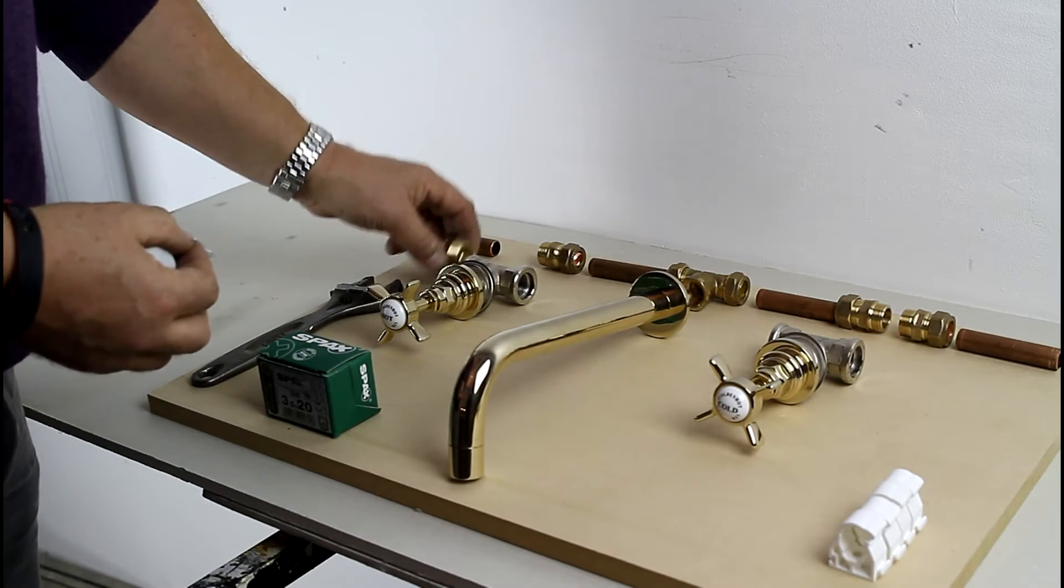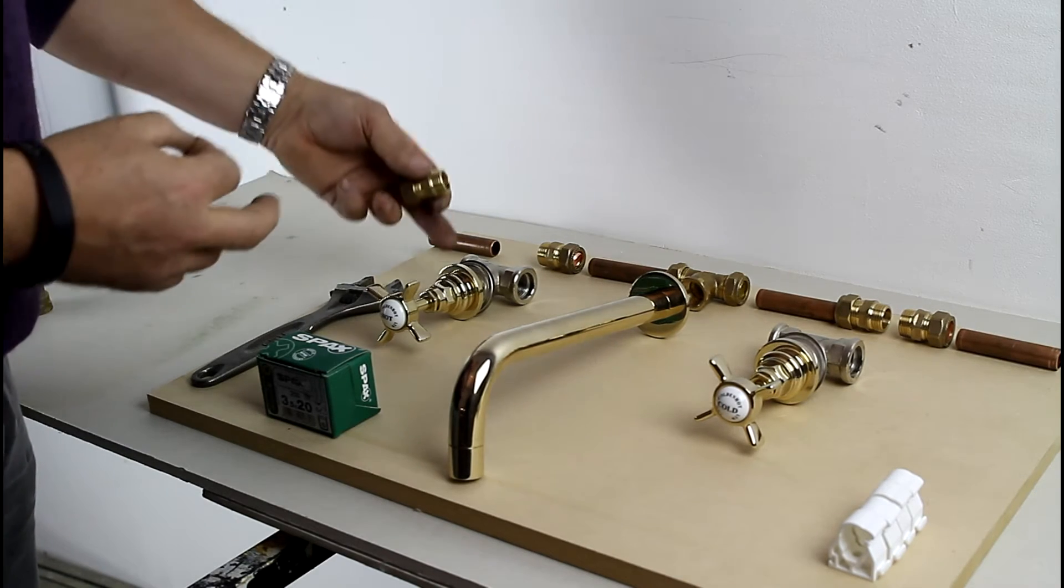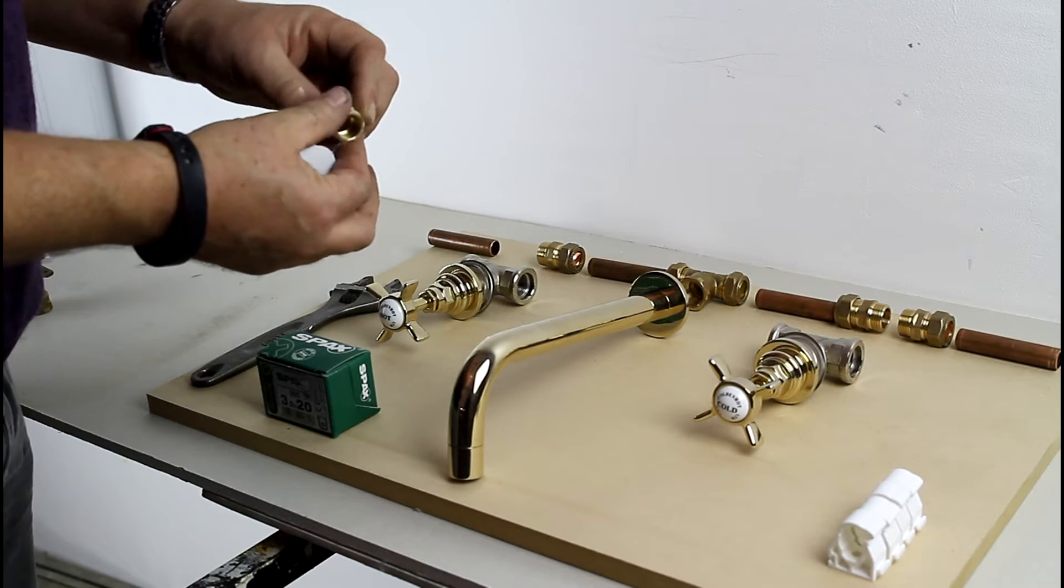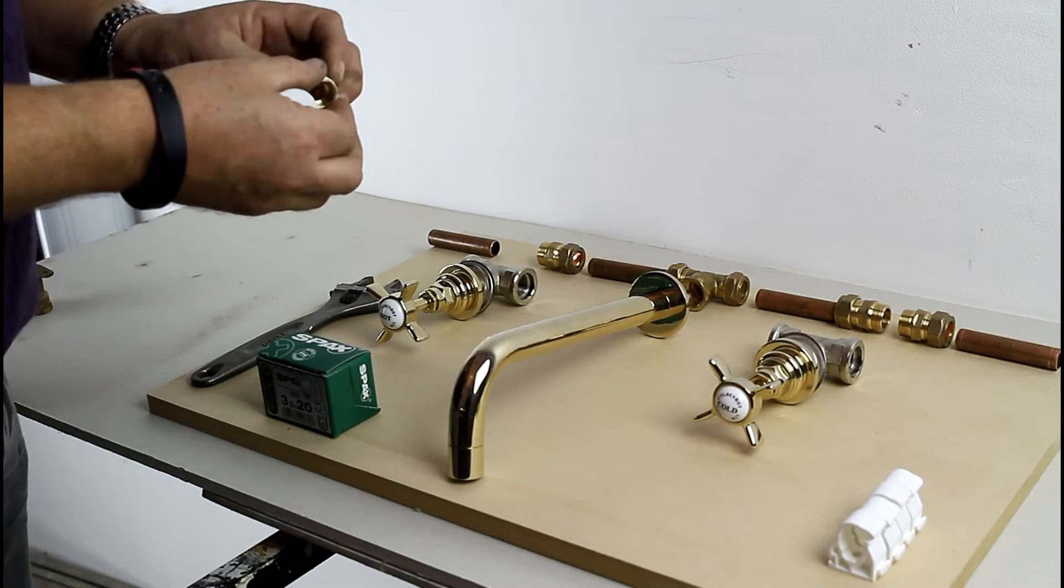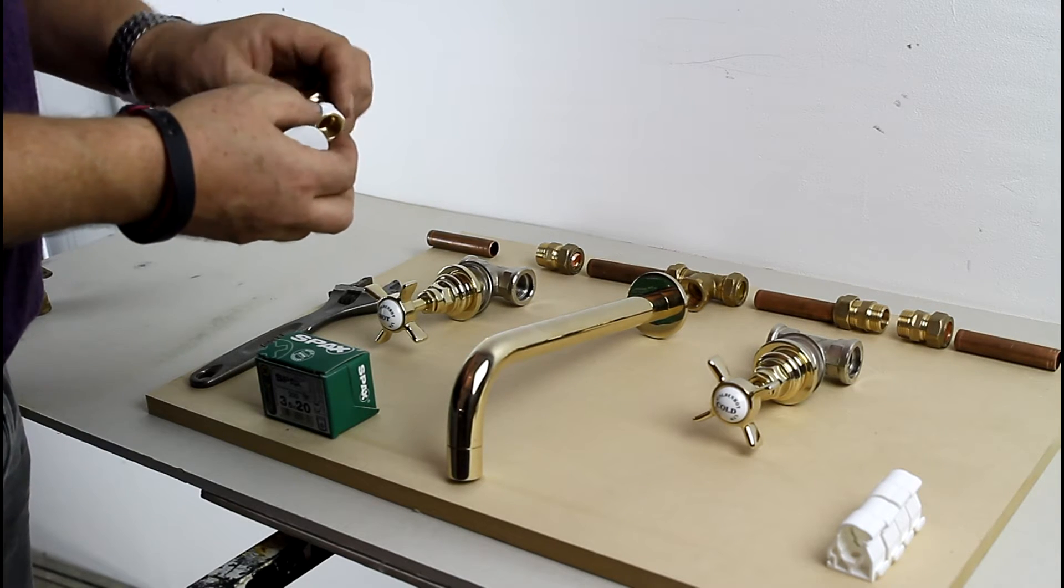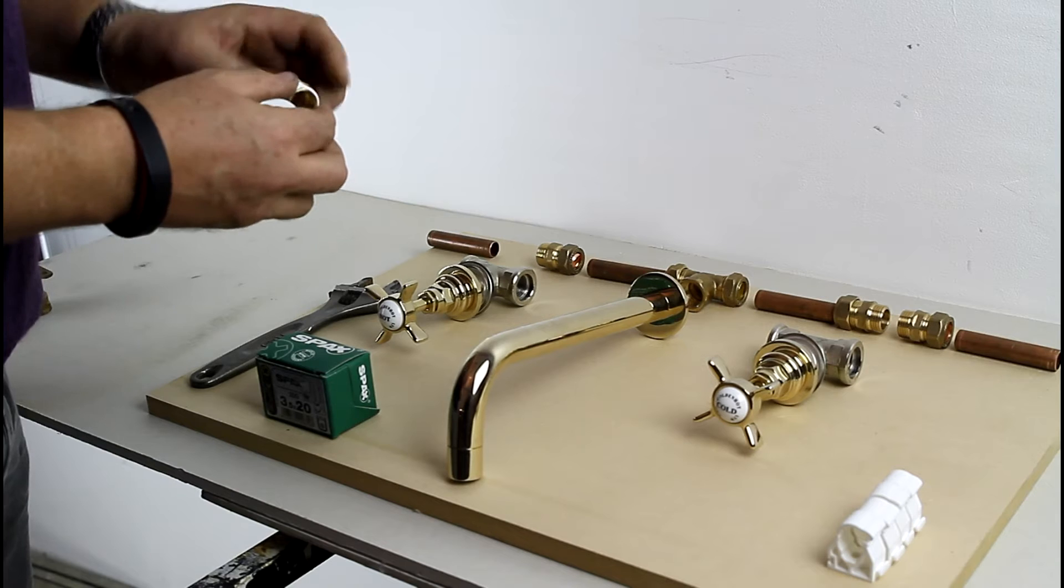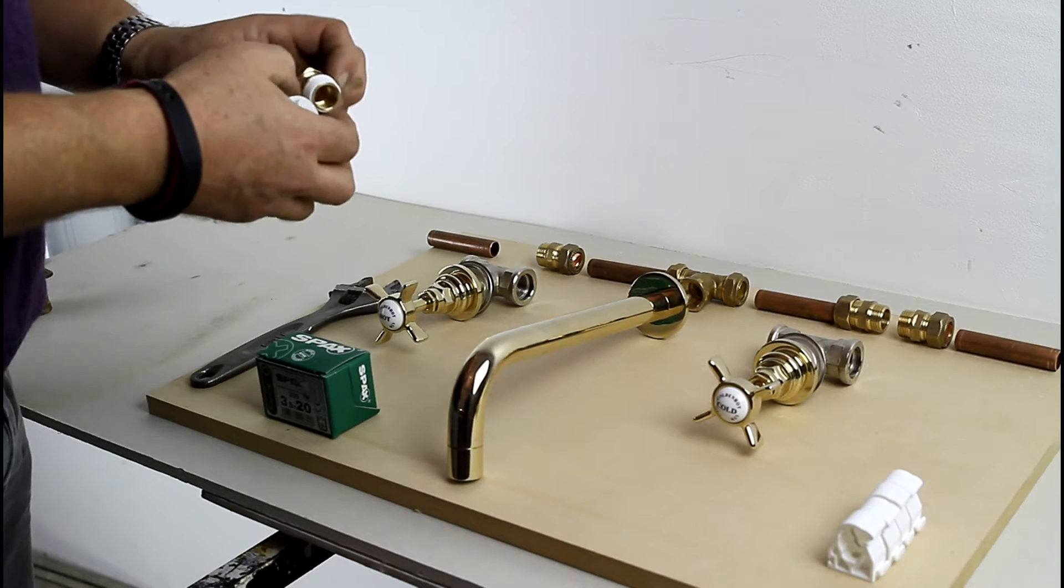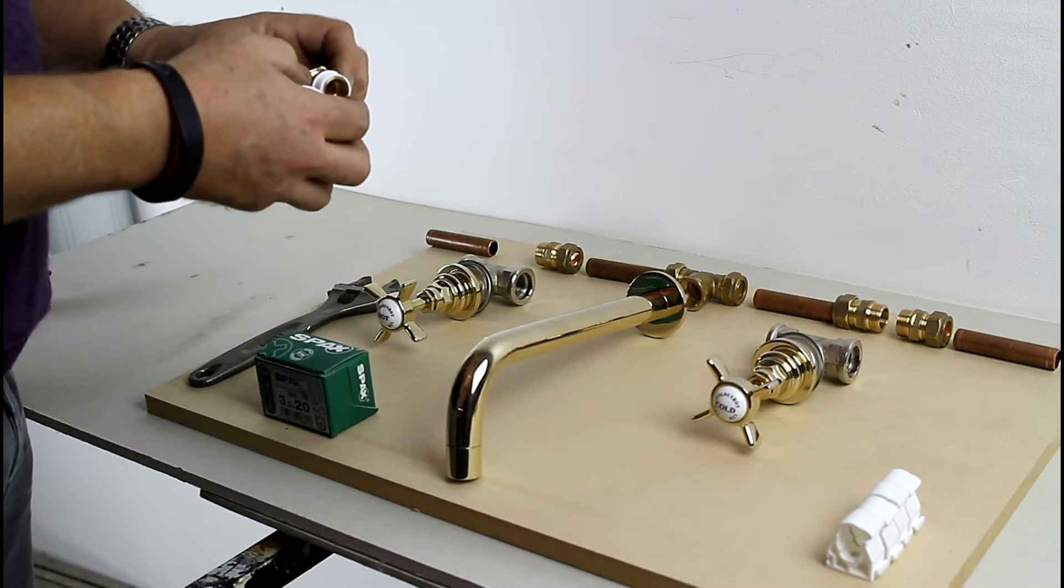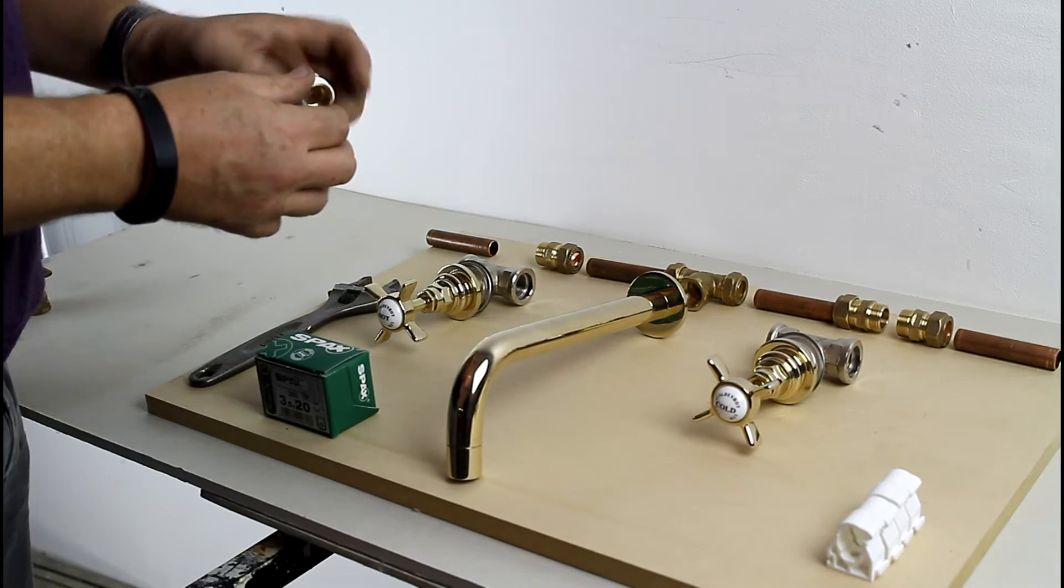Right, the next thing to do is all the threads need to have PTFE tape put on it which is basically to make a leak-free seal. You just put this tape on, put plenty of it on, and this seals the threads and doesn't allow any water to come down the threads.